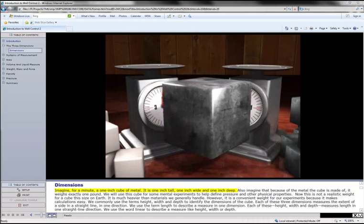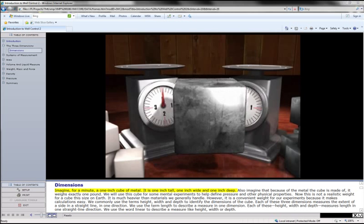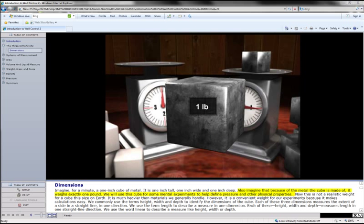Imagine for a minute a 1-inch cube of metal. It is 1-inch tall, 1-inch wide, and 1-inch deep. Also imagine that because of the metal the cube is made of, it weighs exactly 1 pound. We will use this cube for some mental experiments to help define pressure and other physical properties.